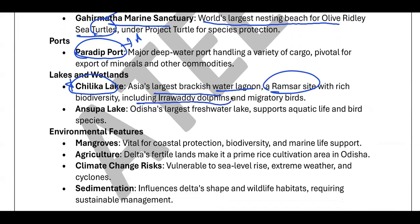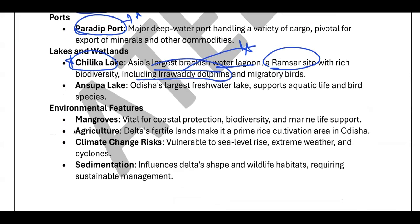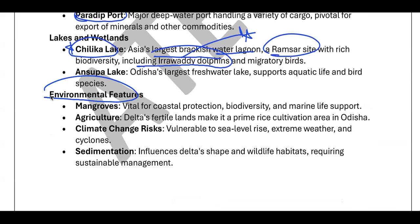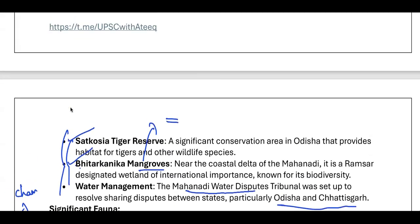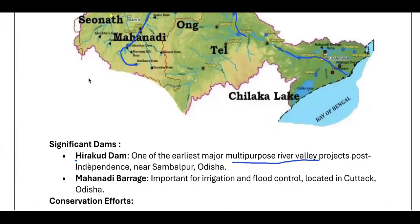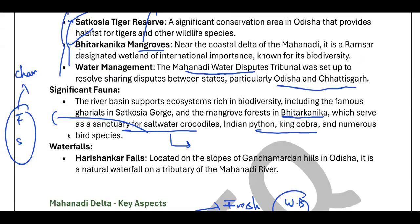The Mahanadi Delta region is also known for Irrawaddy dolphins. You also need to know about the Indus dolphin and Gangetic dolphin. The region faces environmental concerns — mangroves are getting diminished, more land is being used for agriculture, water problems are increasing, and climate change is a factor. All these are relevant from the prelims point of view. The important facts have been covered in one place.